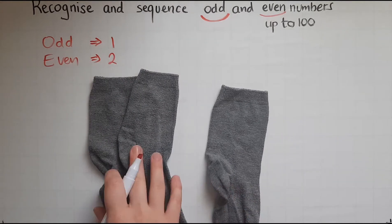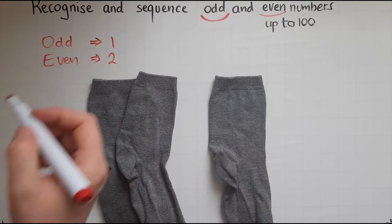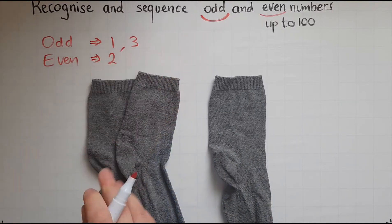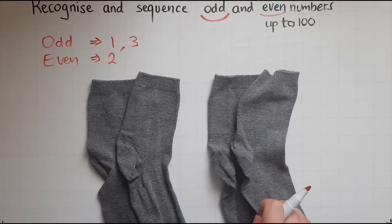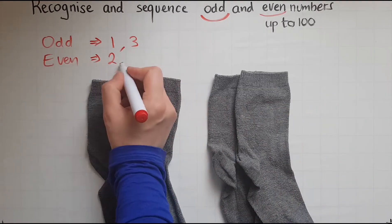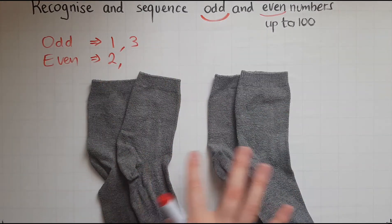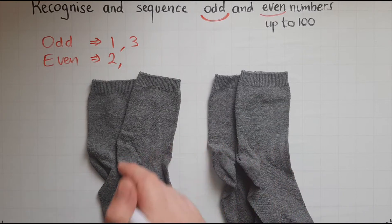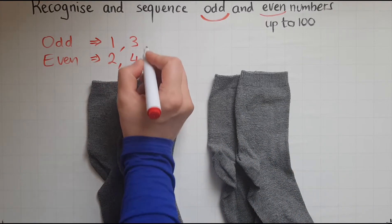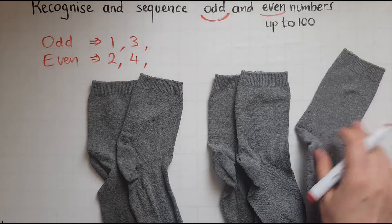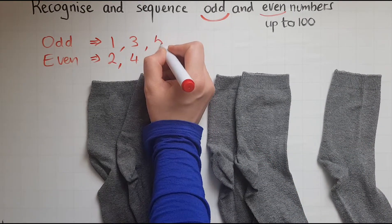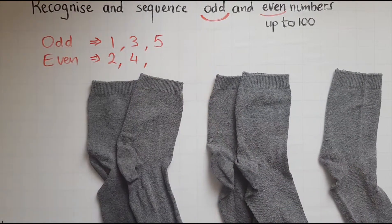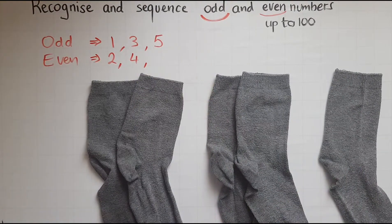Whereas three was odd again because we could make a pair, but there was a sock left. And four is even because we can make exactly two pairs. And five is odd because we have an odd sock in there.